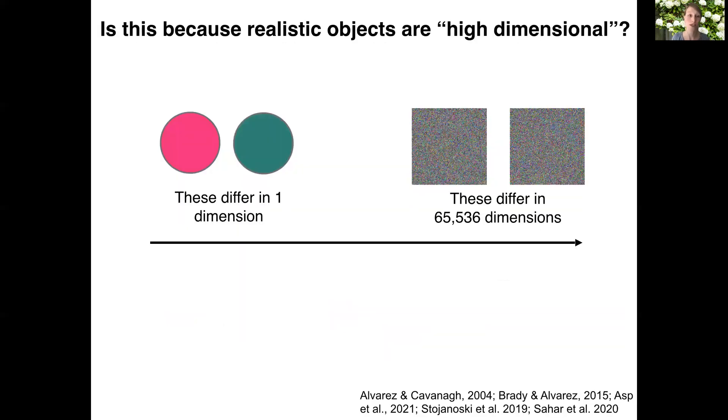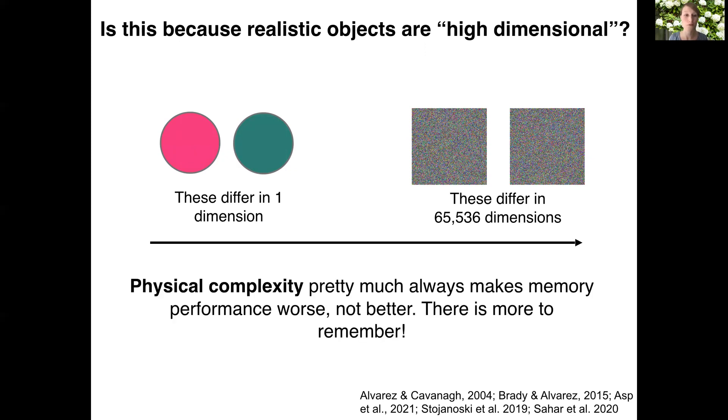An alternative explanation might be that the difference in visual complexity actually underlies these effects, the idea being that there are more features to hold onto for real-world objects relative to these simple unidimensional colored circles. And while this idea is largely at odds with previous work showing worse memory for more complex items, we wanted to test this directly with regards to encoding limits.